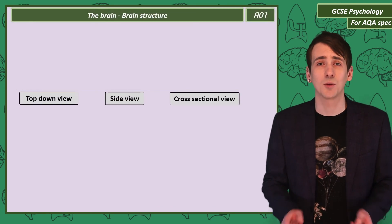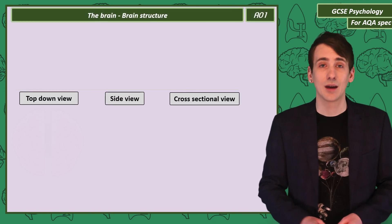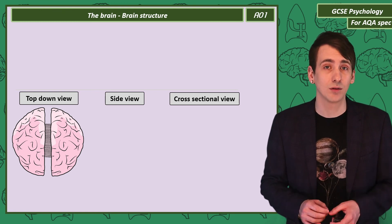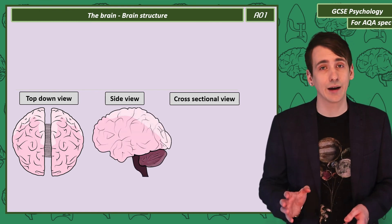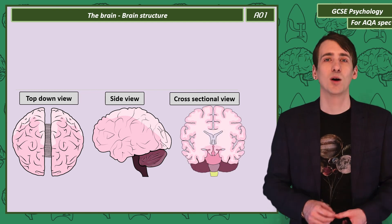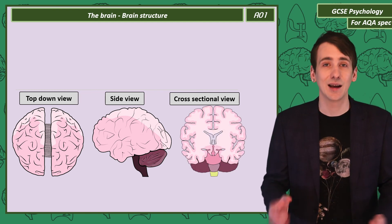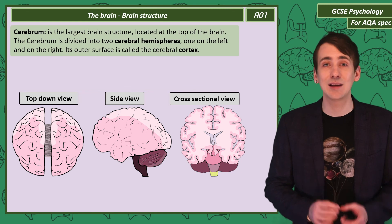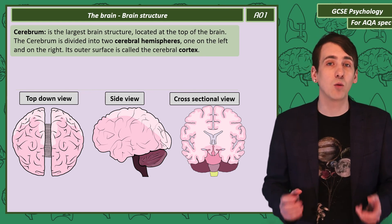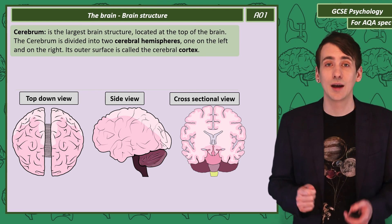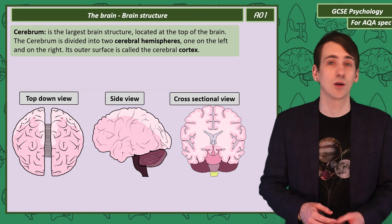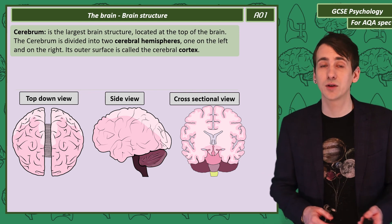Let's start with some classic views of the brain. Here we have a top-down view of the brain, so the brain viewed from above, a view of the brain from the side, and a cross-sectional view of the brain from the front. Most of what you can see in light pink on the side view is the largest brain structure, the cerebrum. It's at the top of the brain, and what's obvious from the top-down view is the brain is split into two halves called the cerebral hemispheres, one on the left and one on the right.